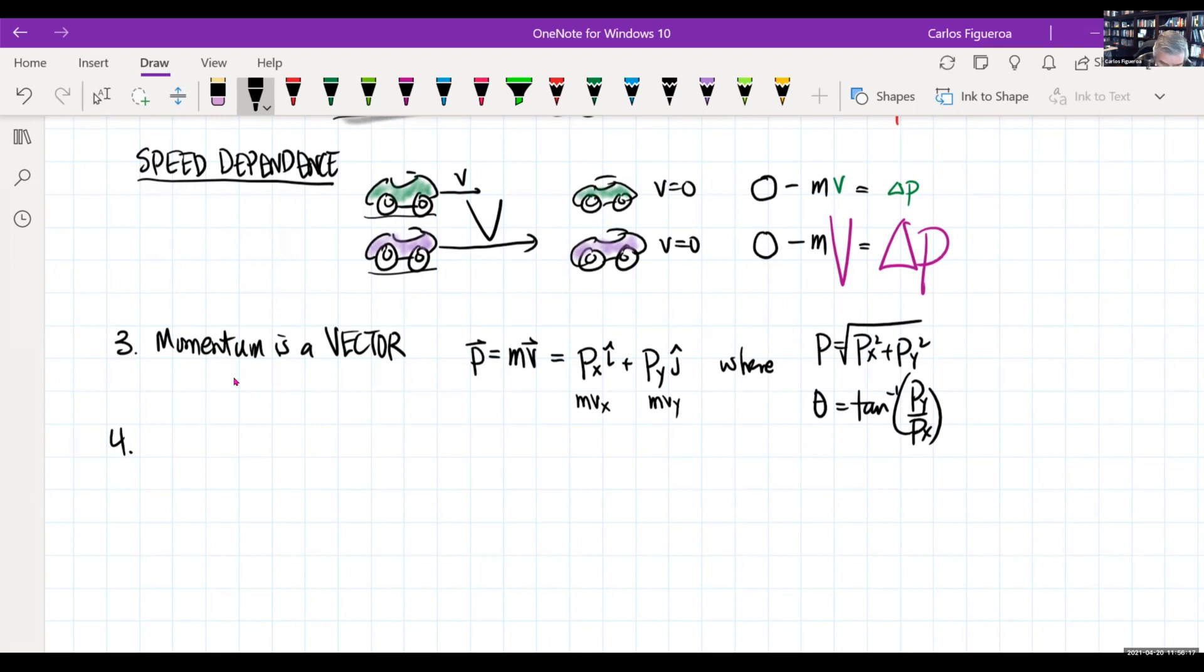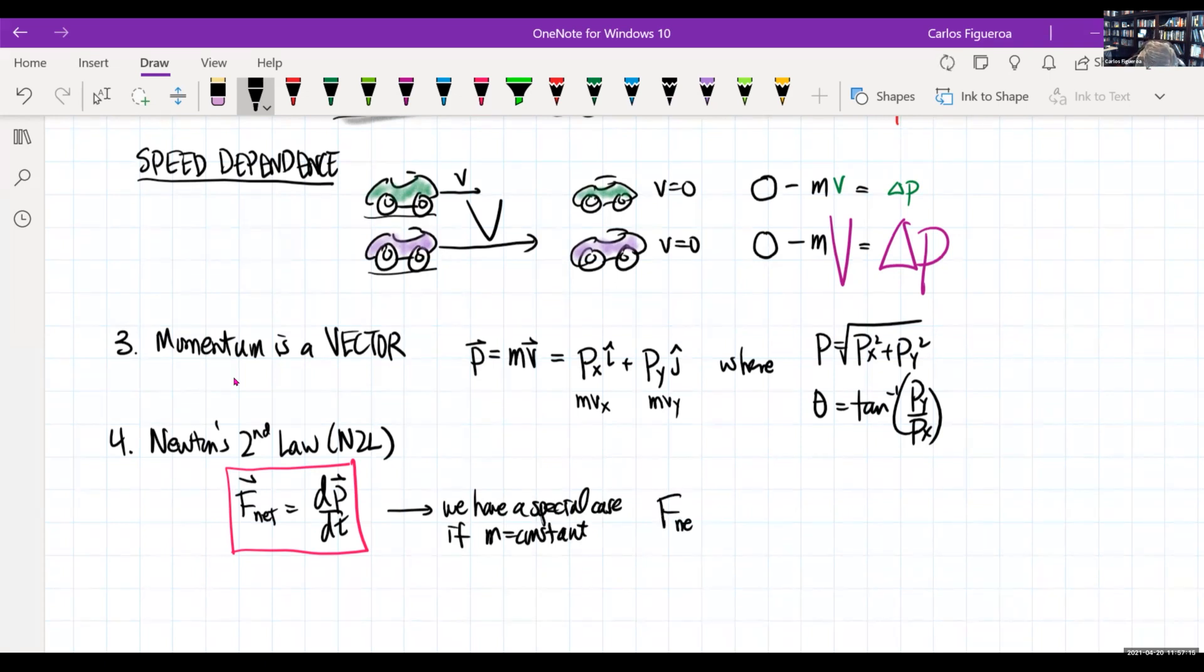And then the fourth thing that I'll talk about is Newton's second law. If you look at the way Newton wrote down Newton's second law, it is not written as f equals to mA. The true definition of Newton's second law is that the net force is the derivative of the momentum. This is Newton's second law. Not f equals to mA. What we find here is that we have a special case if m is equal to a constant. Because if m is equal to a constant, then this tells me here that the net force is really the derivative of mV dt.